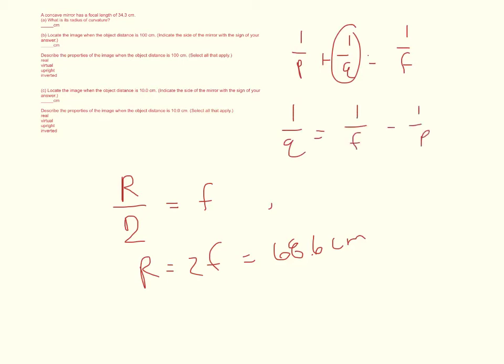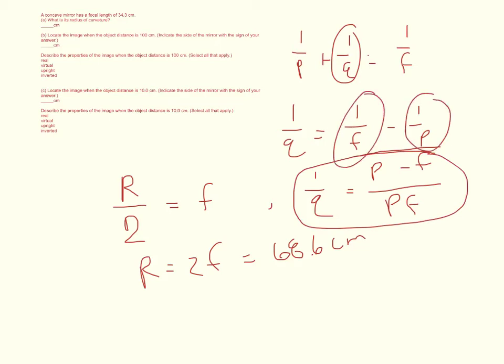I'll find a common denominator between these two. So 1/Q is equal to (P - F)/(PF). I did that by multiplying this term by F/F and this term by P/P, and then subtracting the terms. Then I take the inverse of both sides, so Q equals PF/(P - F).